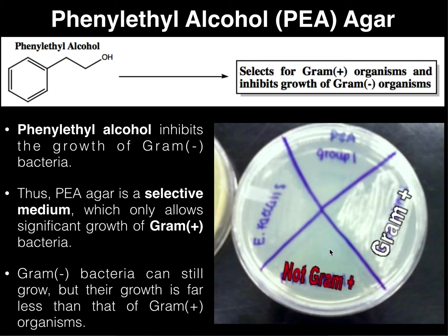That's what PEA agar does — it really just gives you the gram reaction. You may see a little bit of growth in a gram-negative area, but there will be much more growth where there are gram-positive bacteria. Generally when we do this test we're plating only one species, so either the entire plate will have a lot of growth — gram positive — or very little growth — gram negative.